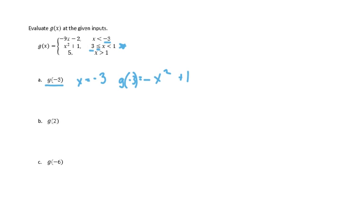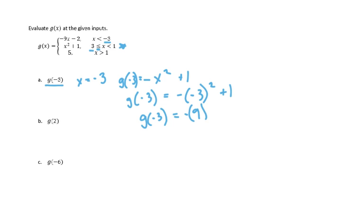Now that we have identified which function to use, we substitute negative three in for x and solve. Negative three squared gives us a positive nine, leaving us with negative nine plus one. Negative nine plus one gives us negative eight, so g of negative three is equal to negative eight.